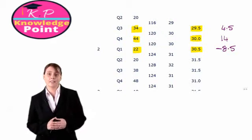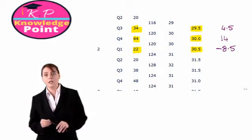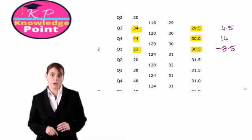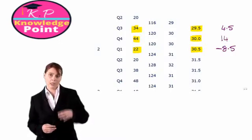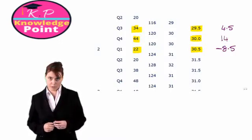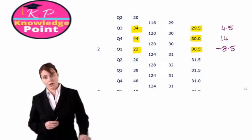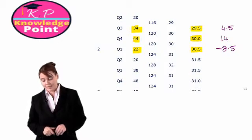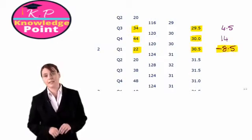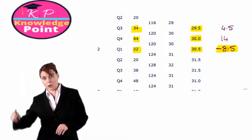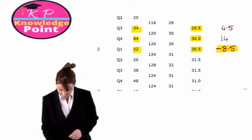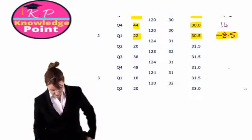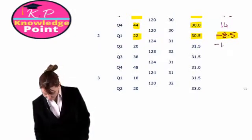We would expect to get a negative figure for the seasonal variation of quarter one. Looking at our sales information, we already know that sales are higher in quarters three and four, whereas in quarters one and two our sales are much lower. So what our seasonal variation is telling us is that in quarter one, our sales will be 8.5 below our trend. For quarter two, the seasonal variation is 20 minus 31.5, giving us minus 11.5.